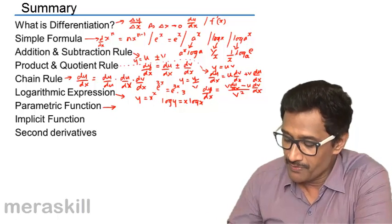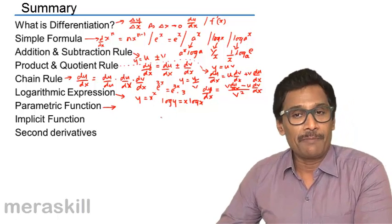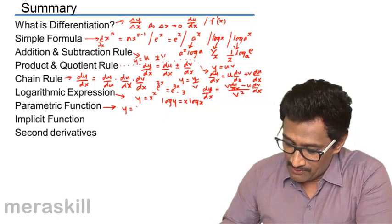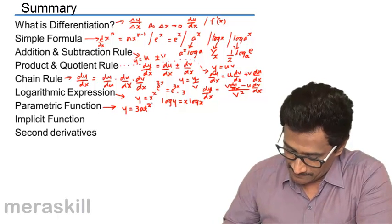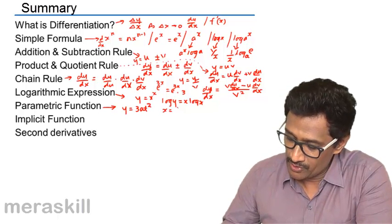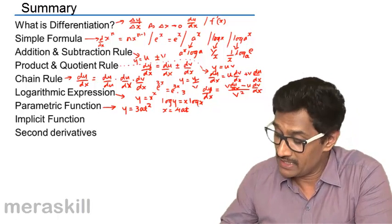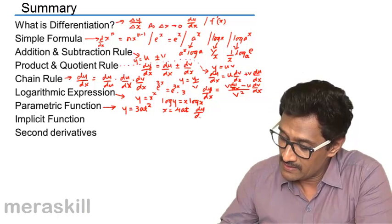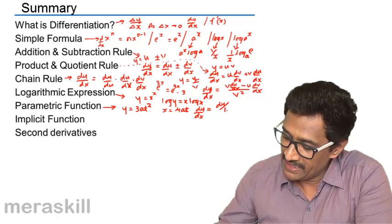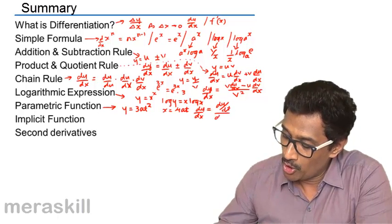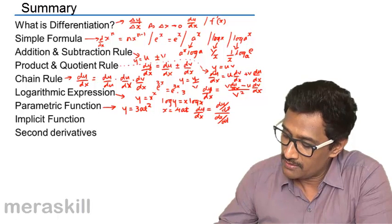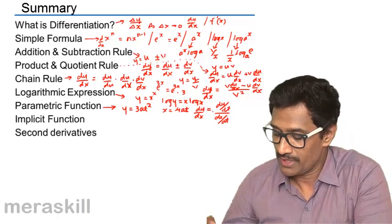Parametric functions. We did examples of parametric functions, when y is equal to 3at squared, x is equal to 4at. Then, we want to find dy by dx. dy by dx is nothing but dy by dt upon dx upon dt. We get that.